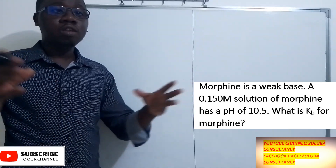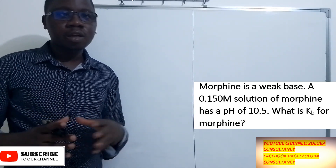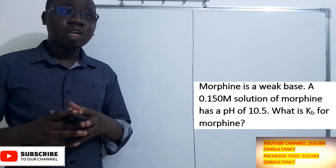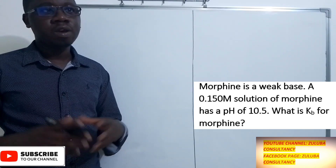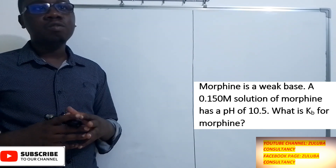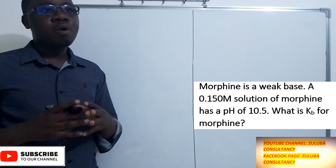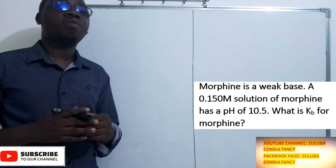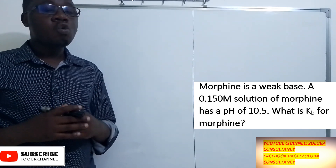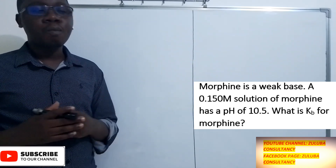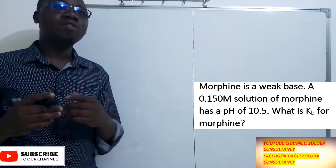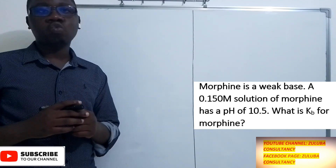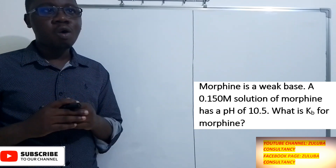Hello and welcome to this video. In this video I want to answer a question under the topic of acid bases and salts, particularly a calculation involving weak bases. The question reads: morphine is a weak base. A 0.15 molar solution of morphine has a pH of 10.5. What is the Kb for morphine? Kb is simply requesting us to calculate the ionization constant of this weak base.